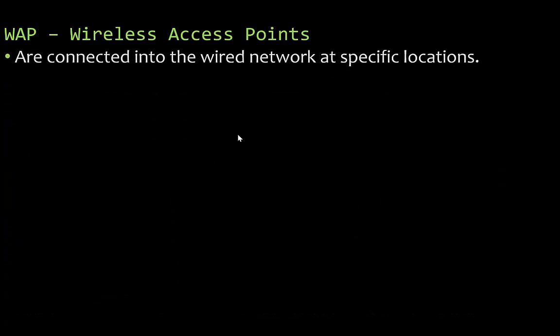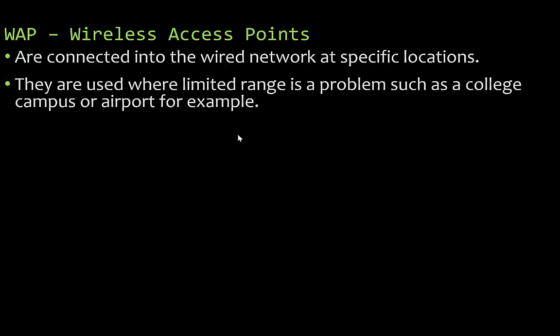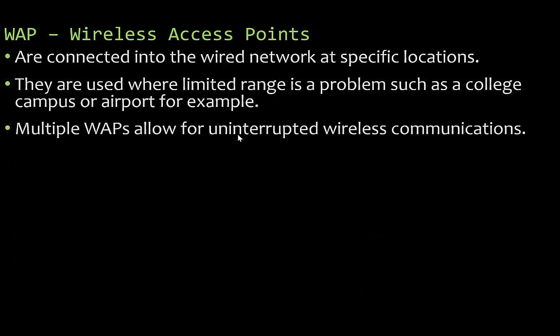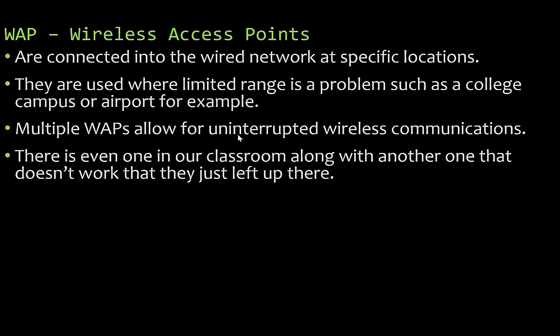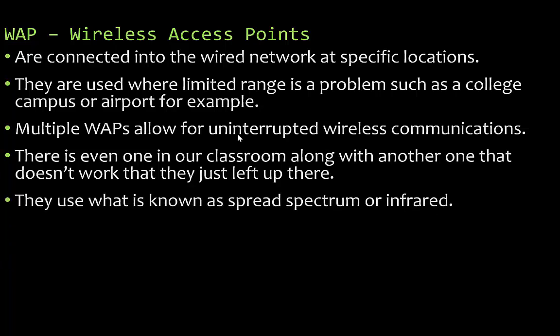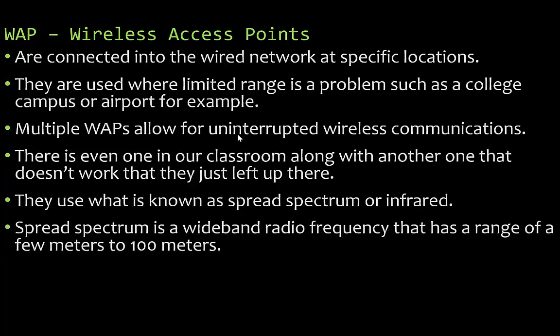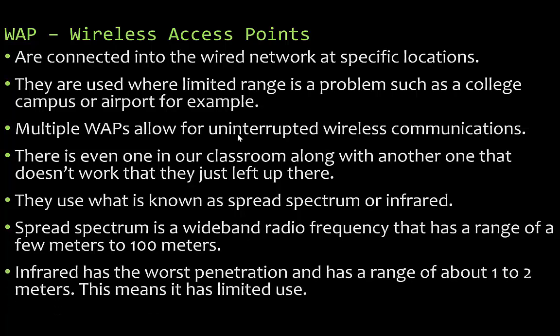Wireless access points are connected into the wired network at specific locations and are used where limited range is a problem, such as a college campus or airport. Multiple wireless access points allow for uninterrupted wireless communications across large areas. They use what is known as spread spectrum or infrared. Spread spectrum is a wideband radio frequency with a range of a few meters to about 100 meters. Infrared has the worst penetration with a range of only one to two meters, giving it very limited use.